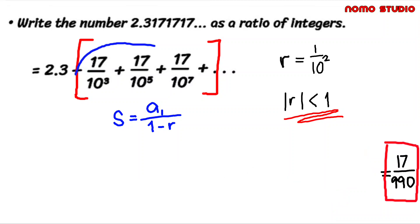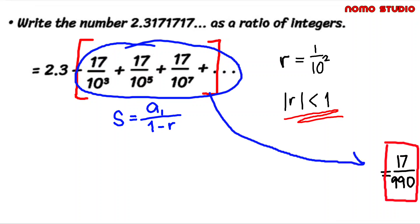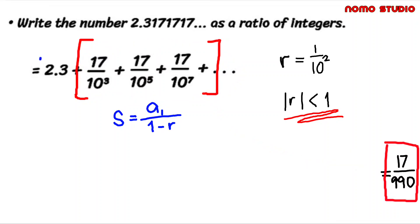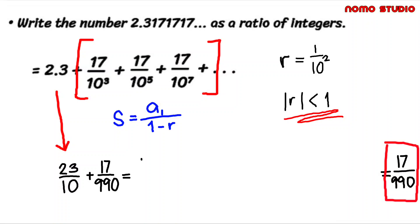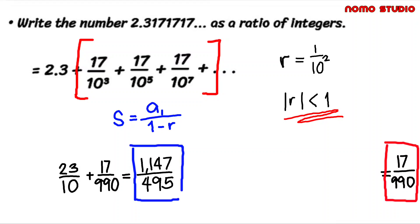Therefore this portion is 17 over 990. Let's now add 2.3 and 17 over 990. First, let's convert 2.3 to a fraction, which is 23 over 10. So 23 over 10 plus 17 over 990 equals 1,147 over 495. This means that the decimal 2.3171717... is equal to 1,147 over 495 as its fractional form.